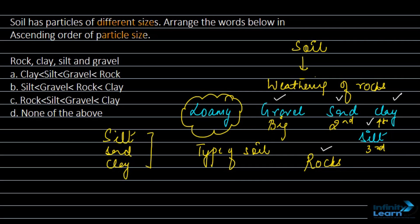So here out of them, the first option says that rock is the biggest, then we have gravel, then silt, and then clay. Yes, this arrangement is right. Second one says clay is bigger—no, clay is never bigger. It is the smallest one. Third order says clay is the bigger one. Again, incorrect.